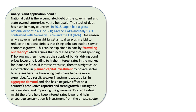As a result — connective phrase there — weaker investment causes a fall in aggregate demand. Weaker investment also has a negative effect on productive capacity and potentially on the country's trend growth rate. Cutting the national debt and improving the government's credit rating might therefore help to keep interest rates lower and help encourage consumption and investment from the private sector. That's a good example of a chunky paragraph of analysis with some application and knowledge.